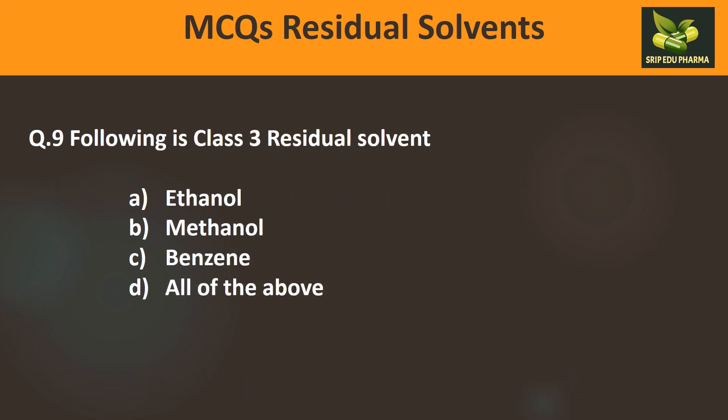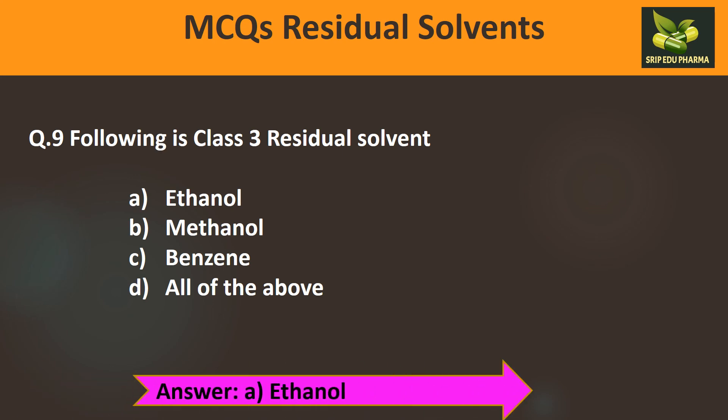Question 9: Which of the following is a Class 3 residual solvent? A) Ethanol, B) Methanol, C) Benzene, D) All of the above. Benzene is Class 1, methanol is Class 2, and ethanol is Class 3. Therefore the answer is A: ethanol.